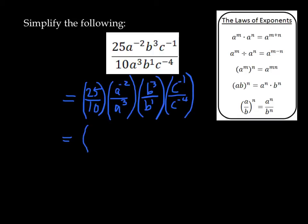25 over 10 can be reduced by noticing a common factor of 5 to 5 over 2. a to the power of negative 2 is the same as 1 over a to the power of positive 2. So we can rewrite it thusly. b to the power of 3 over b to the power of 1, we can jump right to an answer here. That's going to be b times b times b divided by one factor of b, which gives b squared.